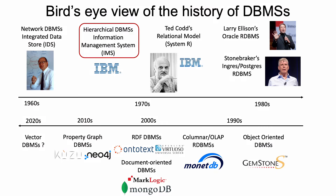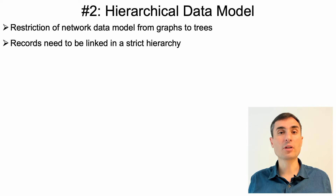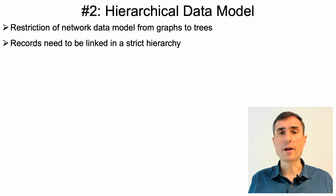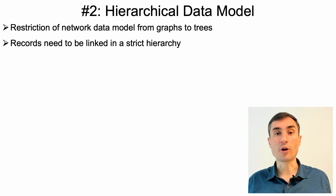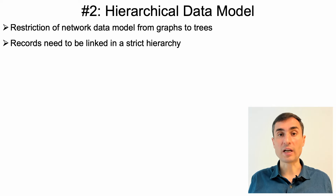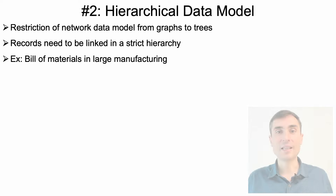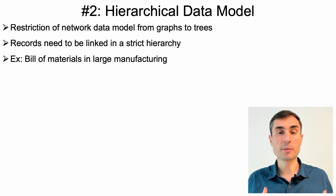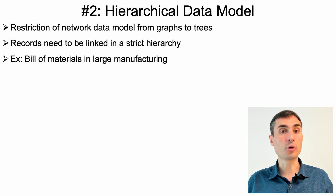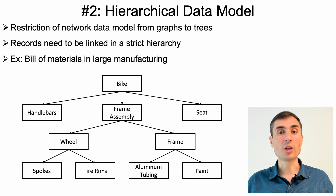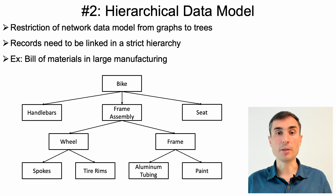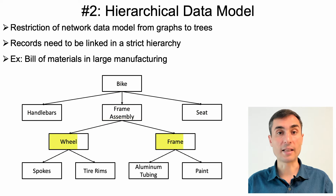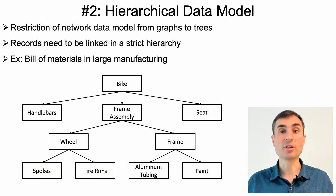The second data model I want to cover is the hierarchical data model. It is very similar to the network model and is essentially a restriction of it — instead of forming arbitrary graphs of records, you can only form trees of records. Trees are the natural abstraction to represent strict hierarchies in the real world. The classic motivating example was the bill of materials application, where the goal is to model complex structures of large engineering and manufacturing projects by breaking them down into a hierarchy of subcomponents recursively — for example, a bike consists of a handlebar, frame assembly, and seat, and the frame assembly further consists of two wheels and the frame.